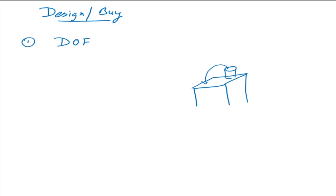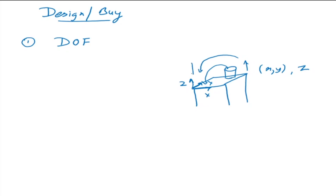That depends on the object and the task. For this symmetric cylindrical object, you will require 3 degrees of freedom: x and y to define the location of the CG on the table, and z to move it up and down—to take it up and put it elsewhere. That is 3 degrees of freedom.